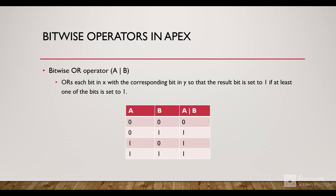Now the bitwise OR operator. The OR operator is represented by the pipe symbol. What this operation does is it ORs each bit in X with the corresponding bit in Y so that the result bit is set to 1 if at least one of the bits is set to 1. So if any one of the bits is 1, the result would be 1.